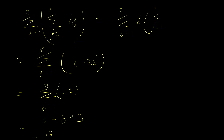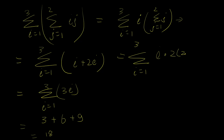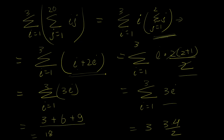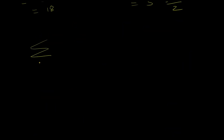That gives 3 for i equals 1, plus 6 for i equals 2, plus 9 for i equals 3, totaling 18. Alternatively, you could apply the formula directly: the inner sum of j from 1 to 2 is 2(2+1)/2 equals 3, giving sum of 3i from 1 to 3, and then 3 times 3(4)/2 equals 18. Using formulas is especially useful when the upper limit is large — like 20 — making manual expansion impractical.